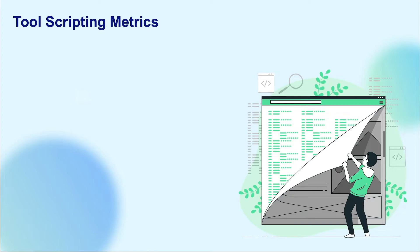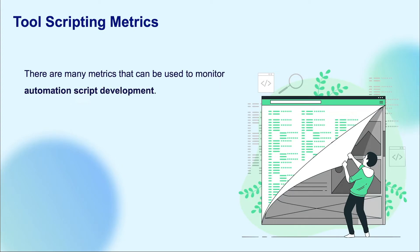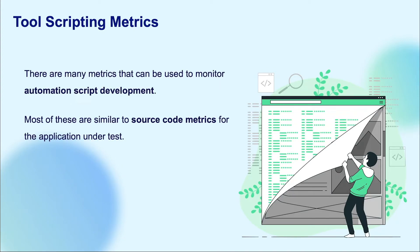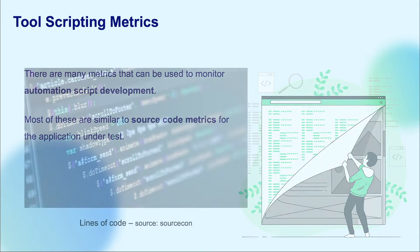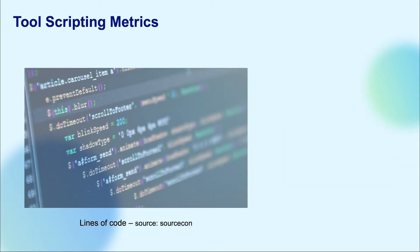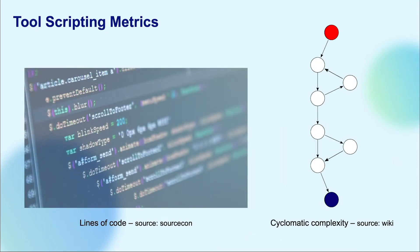For the first internal metric, tool scripting, the different number of scripting standards for different companies will determine the extent to which these standards are being followed. There are many metrics that can be used to monitor automated test script development, most of which are similar to source code metrics for the application under test. For example, lines of code or cyclomatic complexity can be used to highlight overly large or complex scripts.